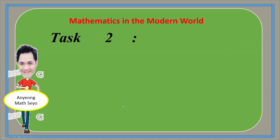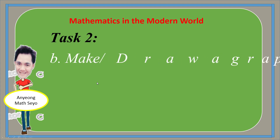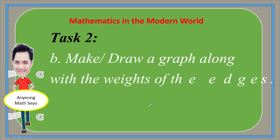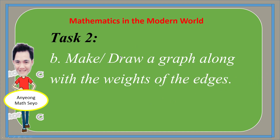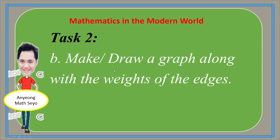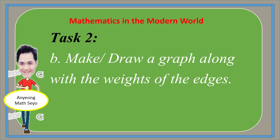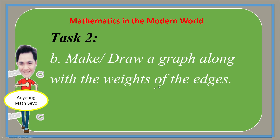Using the table, you are going to do Task 2. Make or draw a graph along with the weights of the edges. Please use a straight edge for it to look presentable, and use different colors in drawing your lines — one line equals one color. Do not forget to write the weights of the edges.